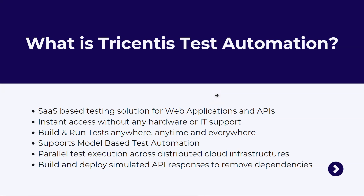Welcome to this brand new playlist on Tricentis Test Automation. If you have gone through the Tosca videos, this is the SaaS-based application offered by Tricentis, which is pretty similar to Tricentis Tosca but has some new features. It can be accessed as a web application, compared to Tosca which is a desktop application. Tricentis Test Automation, also known as TTA, is a SaaS-based testing solution for automating web applications or APIs.